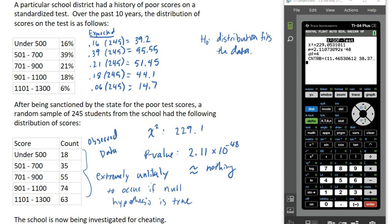The school district was sanctioned, so we would assume that they undertook some sort of initiative to improve test scores. But it's highly unlikely that one year later the results would be this significantly different. Now, this doesn't prove that there was cheating involved, but what this does do is certainly warrant an investigation.